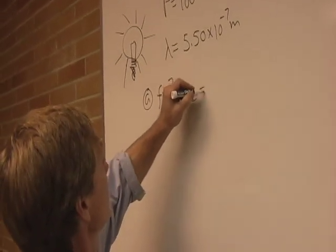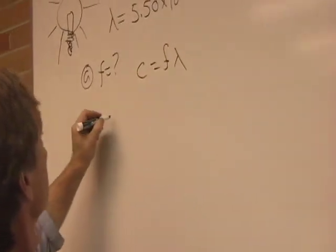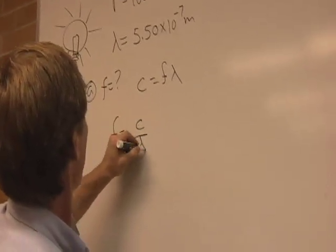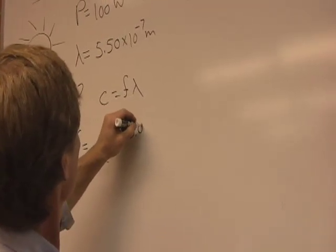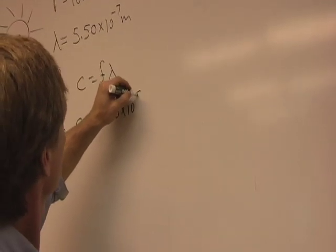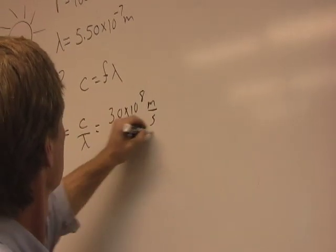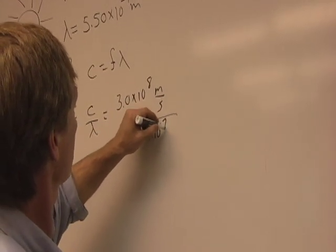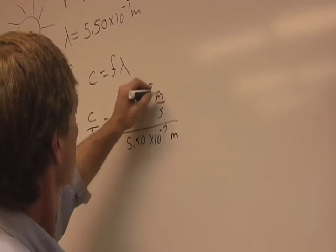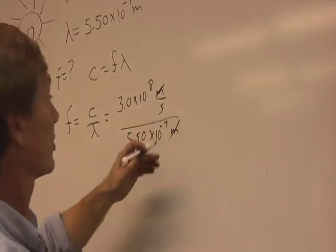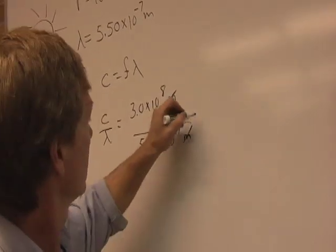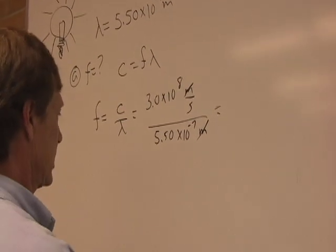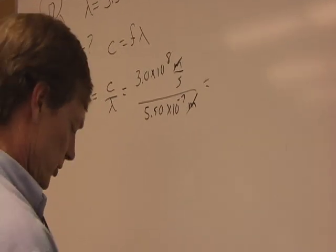Well, speed of light C is equal to frequency times wavelength. So the frequency is equal to the speed of light divided by the wavelength, which is 3.0 times 10 to the eighth meters per second, divided by the wavelength, 5.50 times 10 to the minus 7 meters. Meters cancel. That's all I get per second, cycles per second. That's frequency. And it's going to be like 6 times 10 to the 14th, something like that.